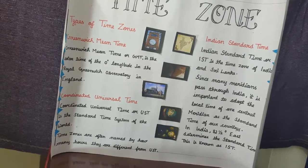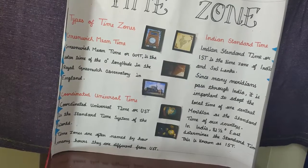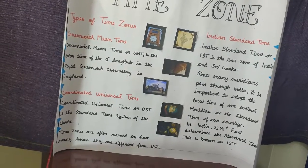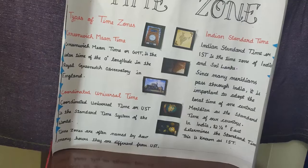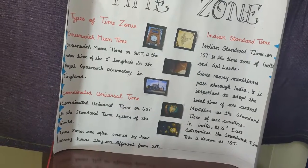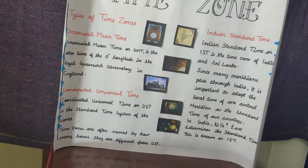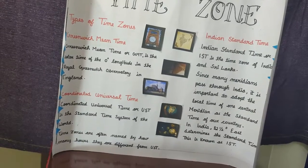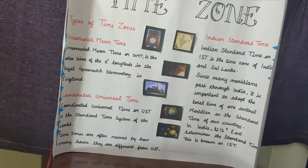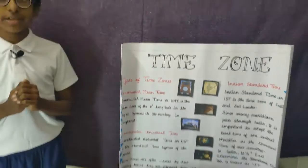Indian Standard Time, or IST, is the time zone of India and Sri Lanka. Since many meridians pass through India, it is important to adopt the local time of a central region as the standard time of our country. In India, 82.5 degrees east longitude determines the standard time, and this is known as IST.